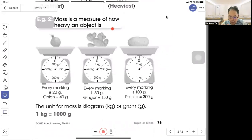Mass is a measure of how heavy an object is. You will see the reading scale from 0 to 100. There are 5 lines: 20, 40, 60, 80, 100. So let's count 20, 40, and here is 40 grams.